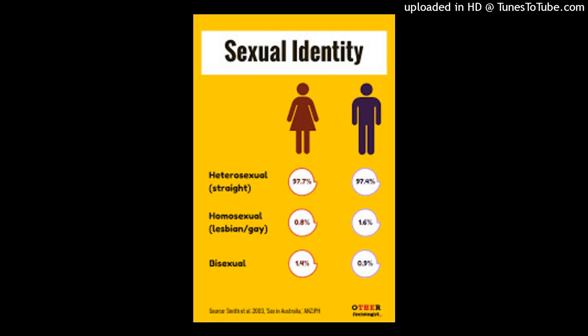Some may be able to openly claim their sexual orientation. In contrast, others may be unready or unwilling to make their homosexuality or bisexuality known, since it goes against North American society's historical norms. Alfred Kinsey was the first to conceptualize sexuality as a continuum rather than a strict dichotomy of gay or straight.